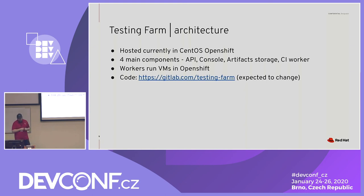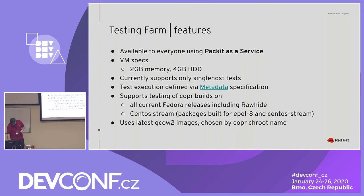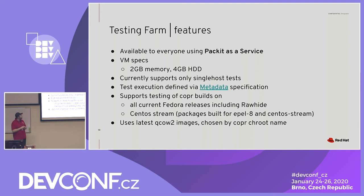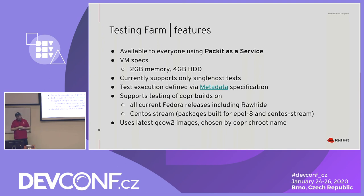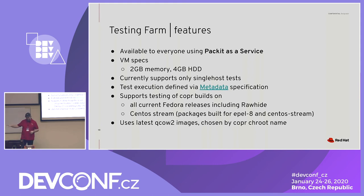The code we have is on GitLab currently, but it's moving — it will change as we open source a lot of stuff from downstream. Testing Farm is available to everybody using Packit as a service. Currently we have hard-coded VM specs — two gigabyte memory and four gigabyte hard drive — but in the future this will be changeable via the metadata specification. We can currently only support single-host tests, so all tests that run here are single-host, but they can run in parallel. The current test execution is defined via metadata specification, so you need to add some metadata describing what it should run.